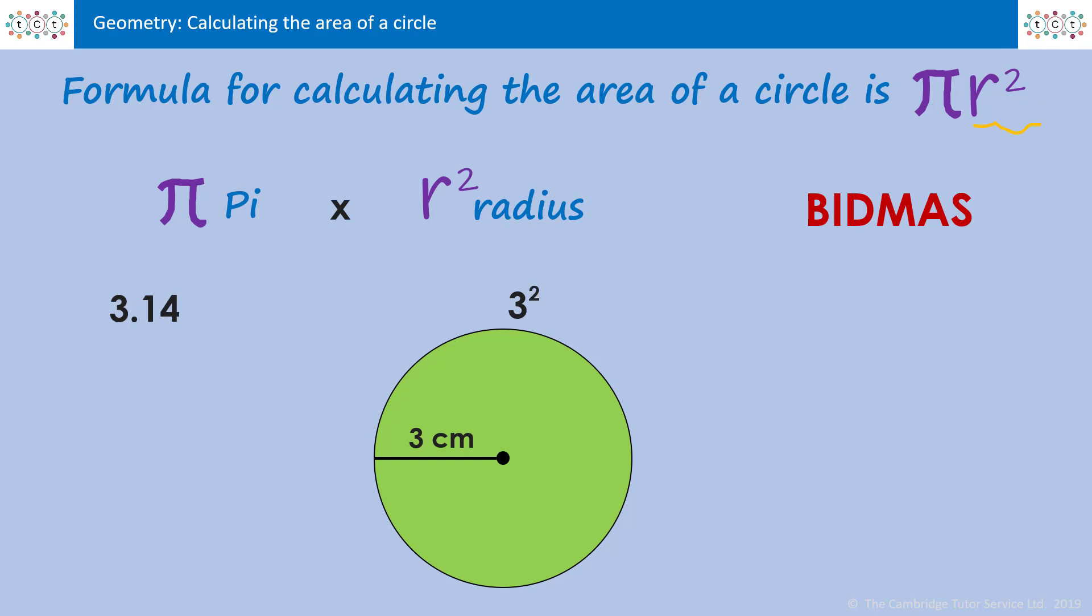So we have to square the radius. 3 squared is 9, so the calculation we're working with is pi, 3.14, times by 9, which is the radius squared. When we calculate that we get 28.26 centimeters. Because it's area it's squared, so we need that little two, that little power of two.